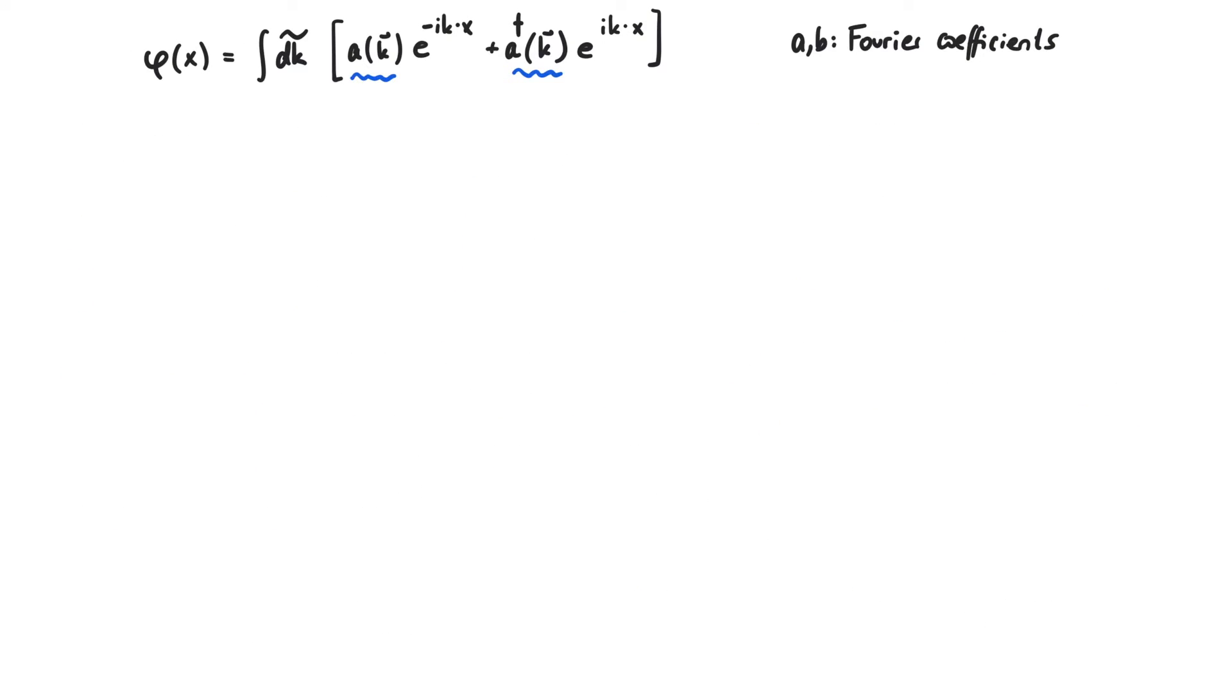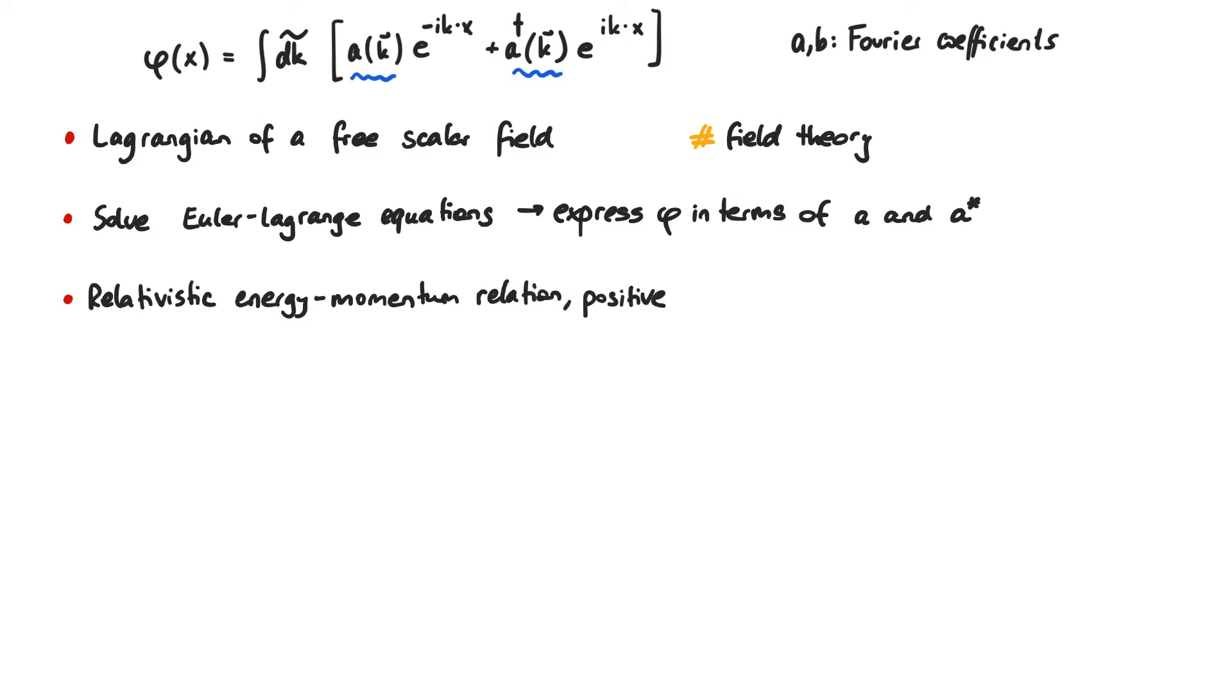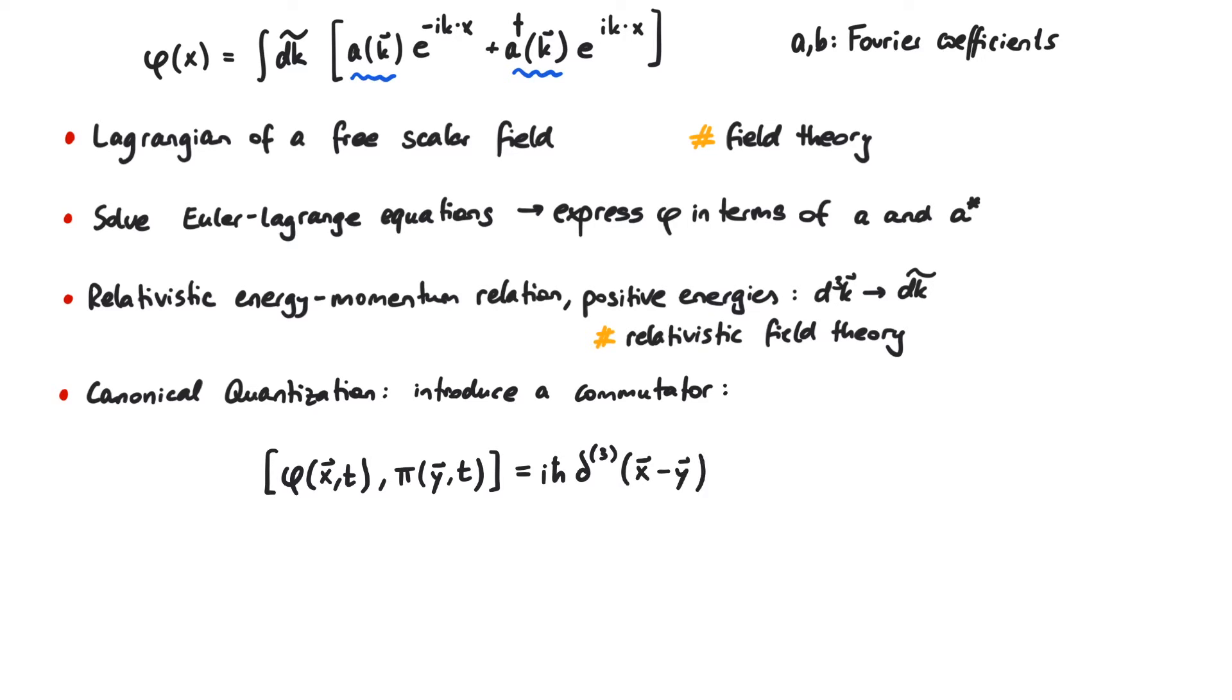Let's summarize what we've seen so far. We started with the Lagrangian of a real scalar field and solved the corresponding equations of motion. This gave us an expression for phi in terms of Fourier coefficients a and a star. After accounting for special relativity, we implemented quantum mechanics by choosing the way of canonical quantization. Canonical quantization means that we see phi now as an operator that fulfills a certain commutation relation. The commutator between phi and pi is a generalization of the commutator found in non-relativistic quantum mechanics.